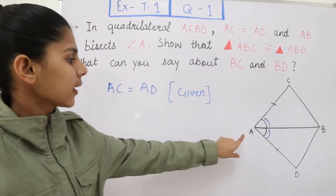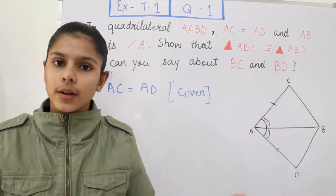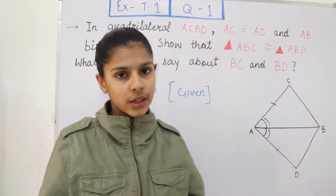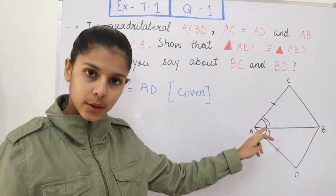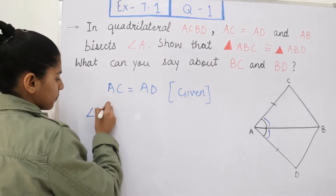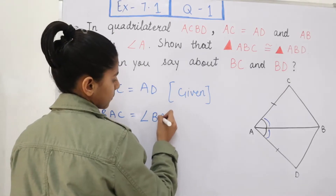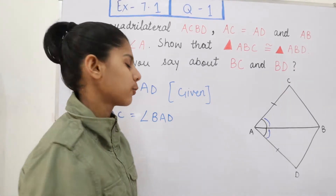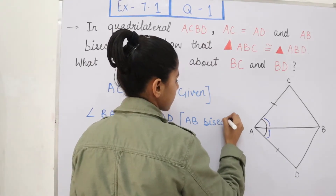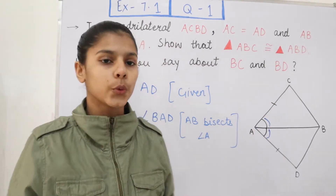It was given in the question that AB is bisecting the complete angle A, meaning it is dividing it into two equal parts. So we can write that angle BAC is equal to angle BAD, because these both angles will be equal since line segment AB bisects the complete angle. The reason we write in the bracket is: AB bisects angle A, so it divides it into two equal parts.